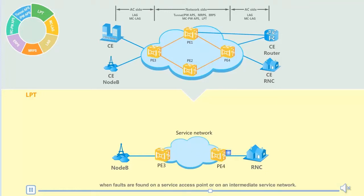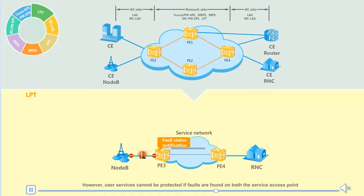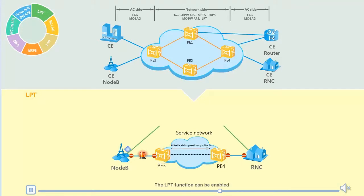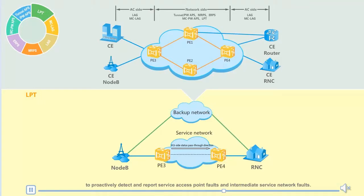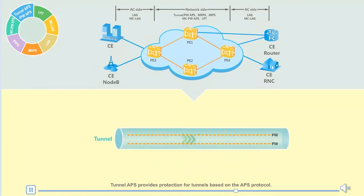On a traditional network, protection is mainly provided for services when faults are found on a service access point or on an intermediate service network. However, user services cannot be protected if faults are found on both the service access point and intermediate service network. The LPT function can be enabled to proactively detect and report service access point faults and intermediate service network faults. If a fault occurs, the user access devices at both ends of a service network are notified to use the backup network for communication, ensuring normal transmission of important data.